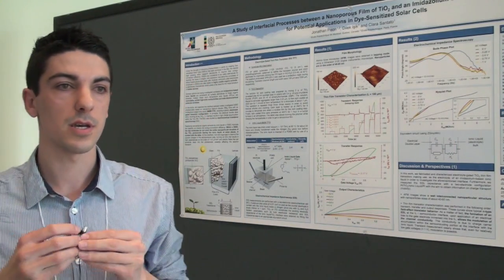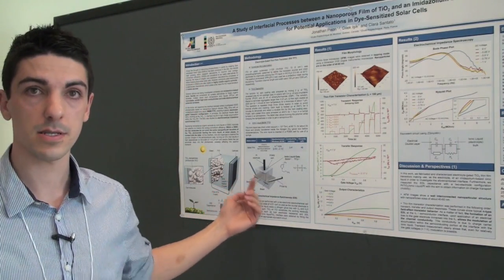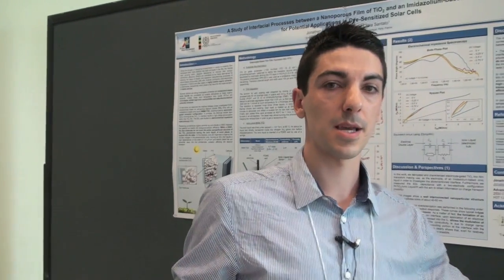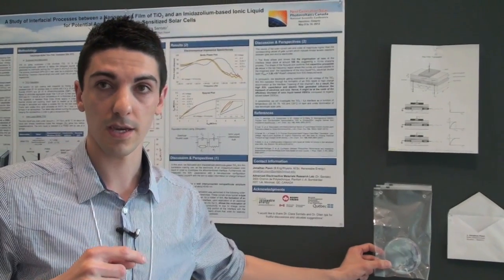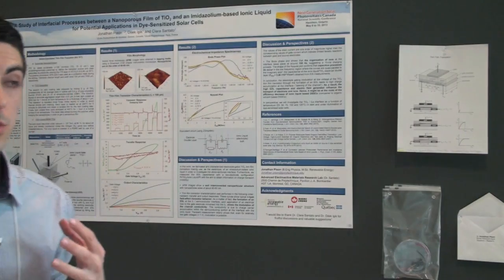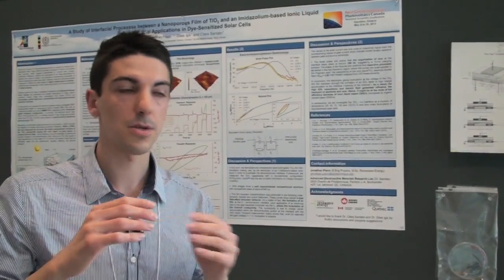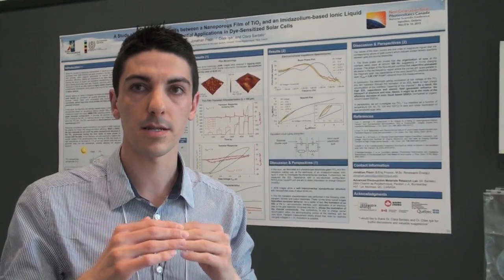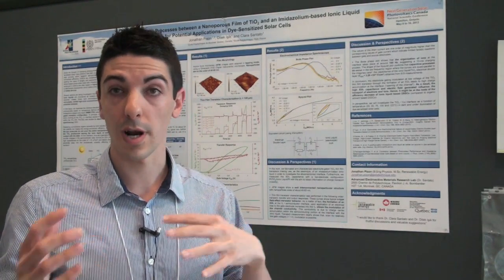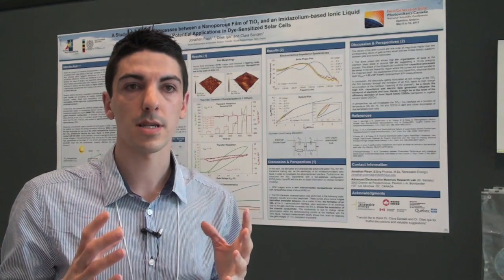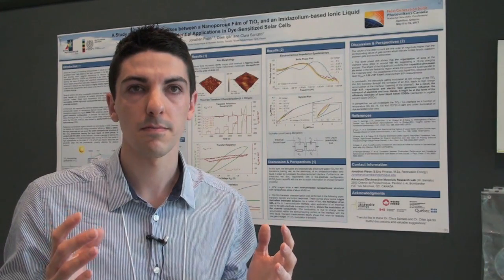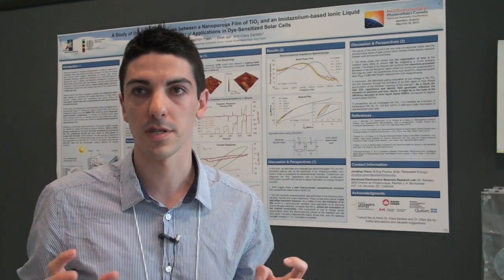And in perspective, we still want to study this interface, but now in a real dye-sensitized solar cell, just like this one here. But instead of having an organic solvent, we're going to use an ionic liquid. And we want to see if the capacitance, the electrical double layer capacitance, is evolving at the function of temperature under light and in the dark. So we can choose suitable ionic liquids, leading to better overall efficiencies.